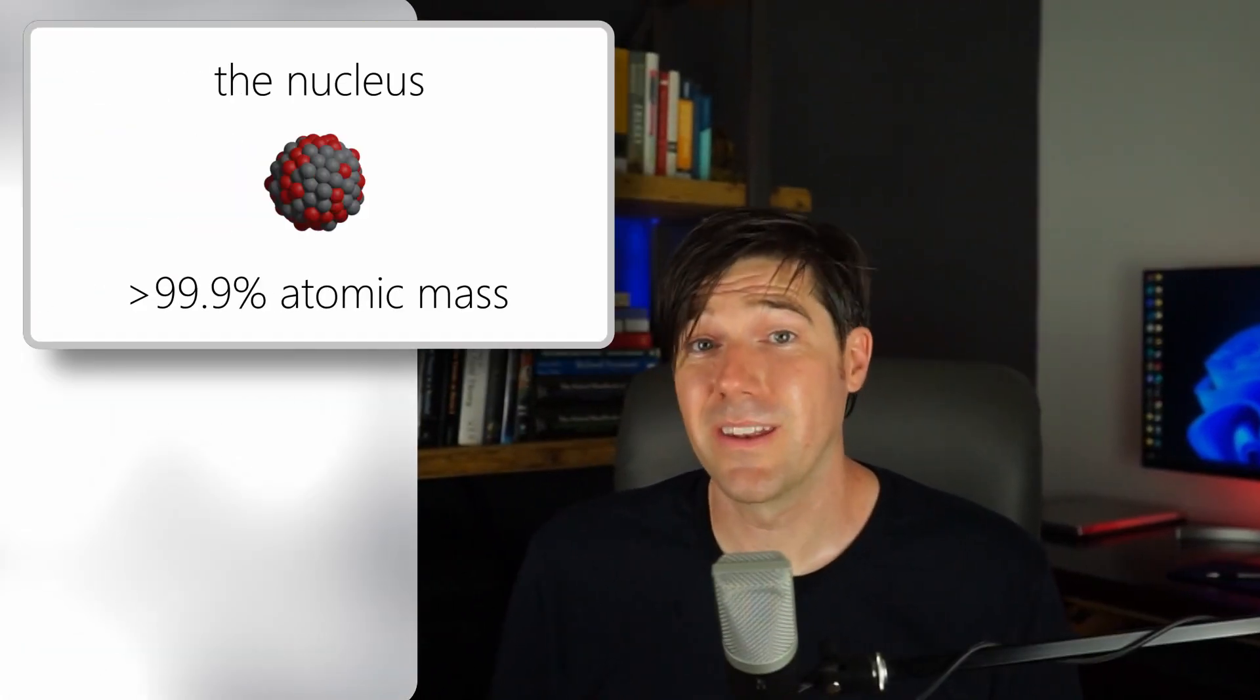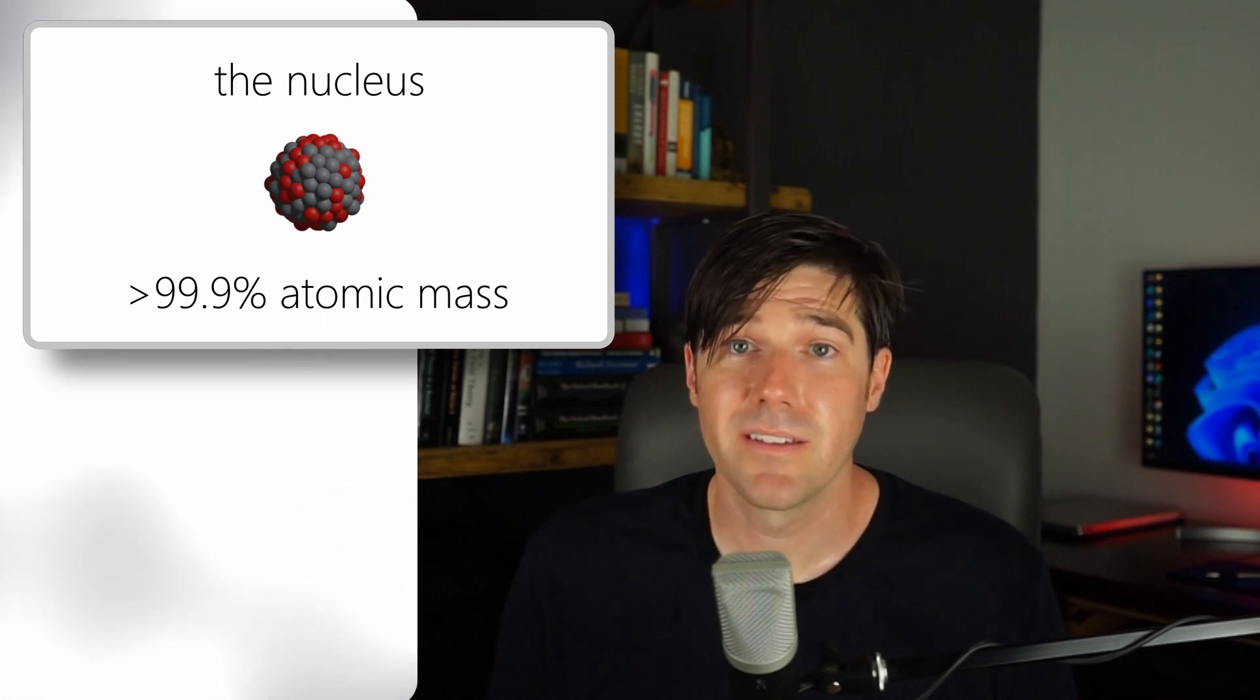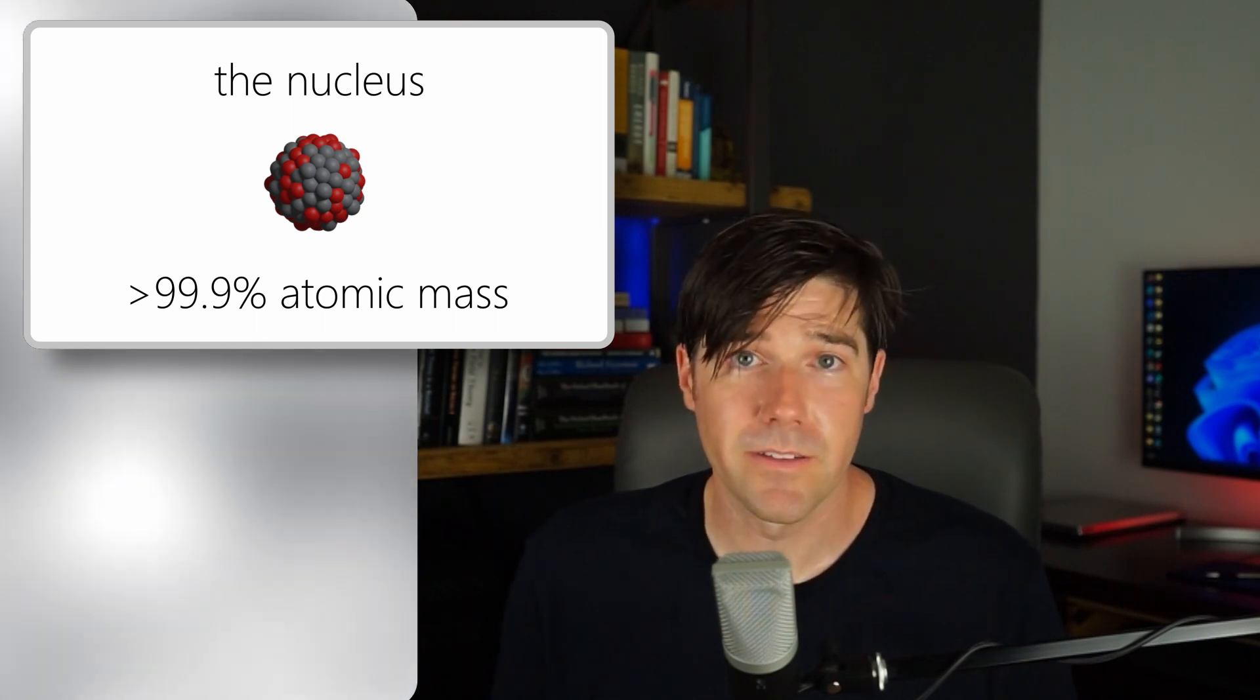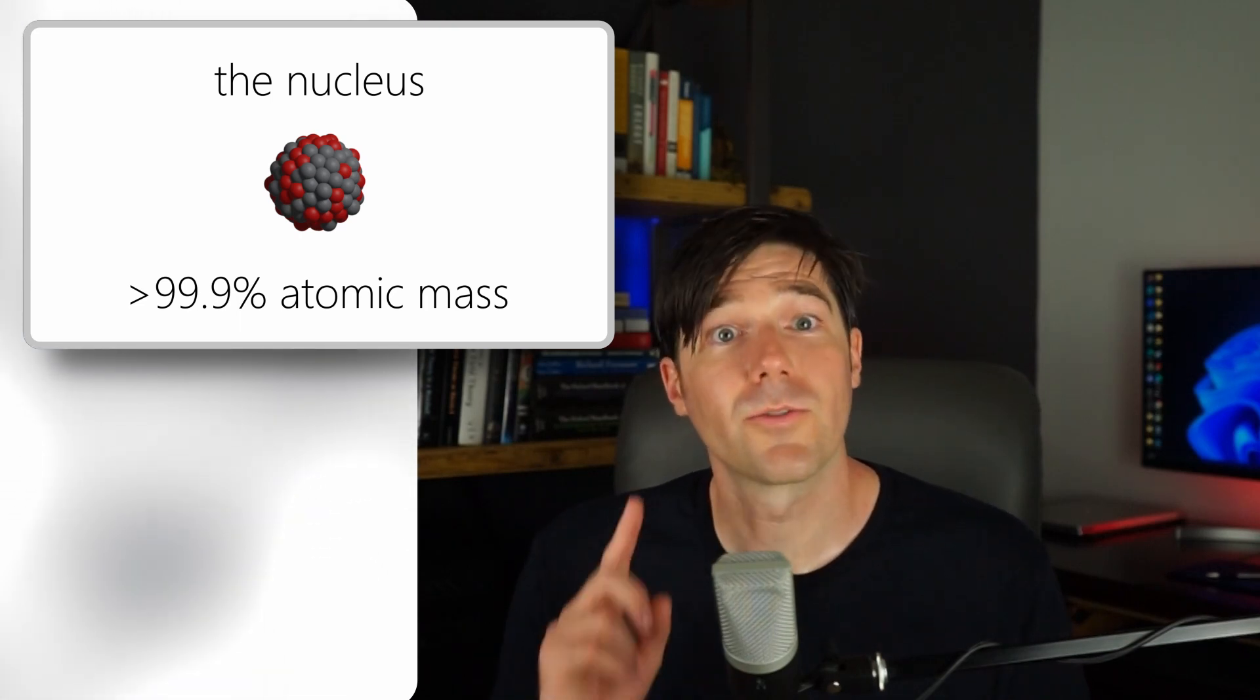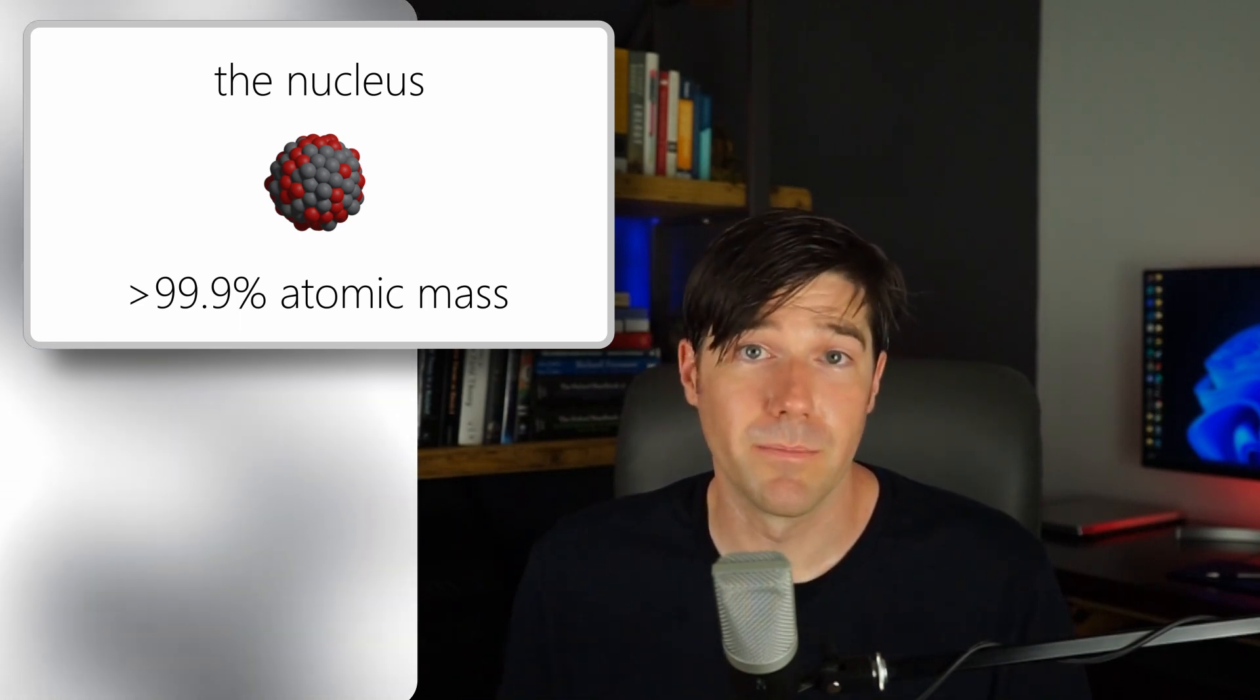And in case you haven't already pieced things together, nuclear weapons didn't derive their name from an atom's electrons. It came from an atom's nucleus. Over 99.9% of an atom's mass is contained within the nucleus. And, as we'll soon see, the mass of an atom is the crucial piece of a nuclear bomb.